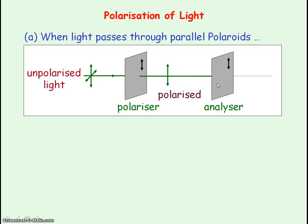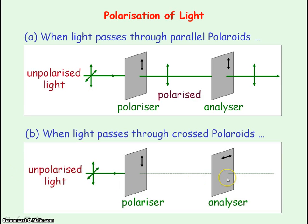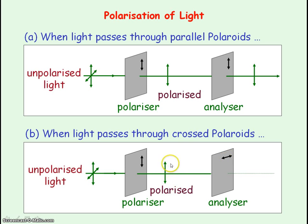The second polaroid is our analyser. Its transmission axis is parallel to the polariser's transmission axis, so this polaroid will allow the polarised light to pass through. Note that the polaroid polarises half of the incident light. When the two polaroids are crossed — their transmission axes perpendicular to each other — the polariser again restricts vibrations to the vertical plane, but because the analyser's transmission axis is along the in-out plane of the screen, the polarised light in the vertical plane cannot pass through the analyser.